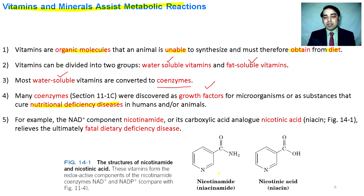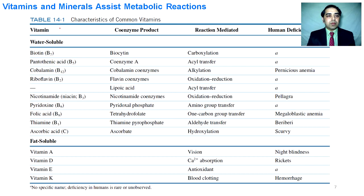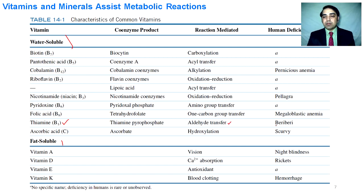Examples of vitamins include nicotinamide and nicotinic acid. This table shows different water-soluble and fat-soluble vitamins. Water-soluble vitamins include biotin, pantothenic acid, cobalamin, riboflavin, and thiamine, which is called Vitamin B1. Thiamine is part of the enzyme thiamine pyrophosphate, and the reaction carried out by this enzyme is aldehyde transfer. Deficiency of this vitamin causes serious disease. Among fat-soluble vitamins, Vitamin A is involved in vision and its deficiency causes night blindness.